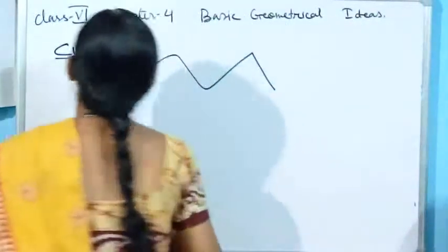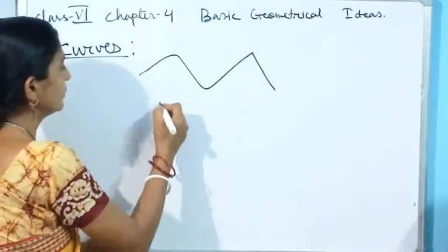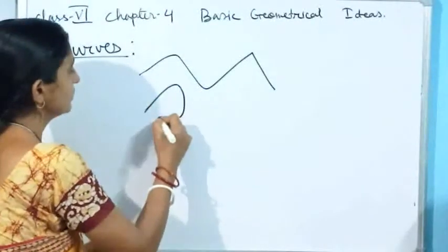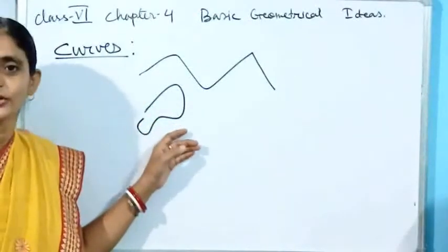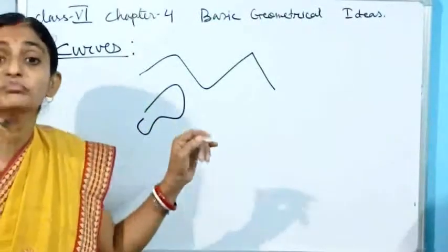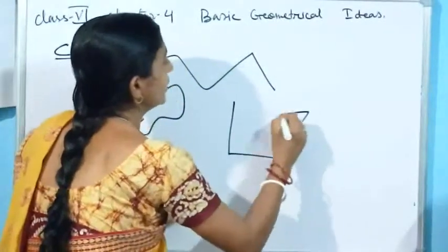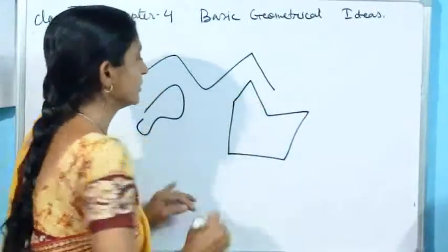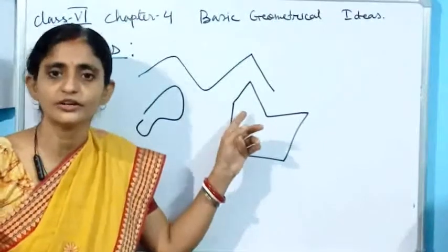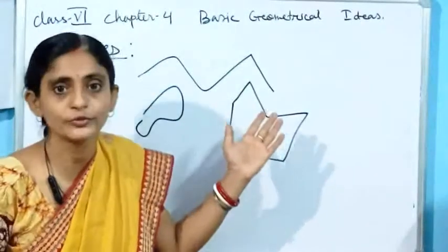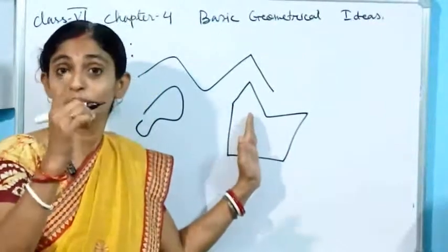When the curve I am drawing, if the lines are not intersecting each other — I am making one — it has not intersected anywhere. So this one is called a simple curve. Here also you can see it is called a simple curve.